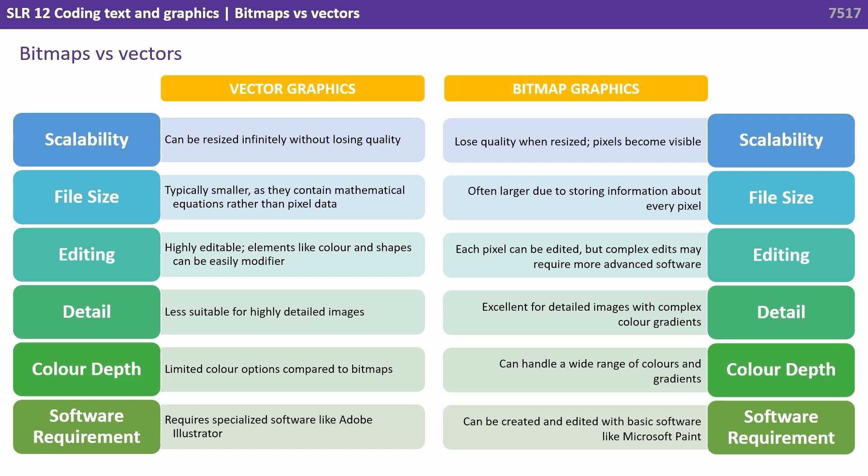Vector graphics are less suitable for highly detailed images, whereas bitmap graphics are excellent for detailed images with complex colour gradients. Vector graphics typically have limited colour options and depth compared to bitmap, whereas bitmap can handle a wide range of colours, shades, hues and gradients.